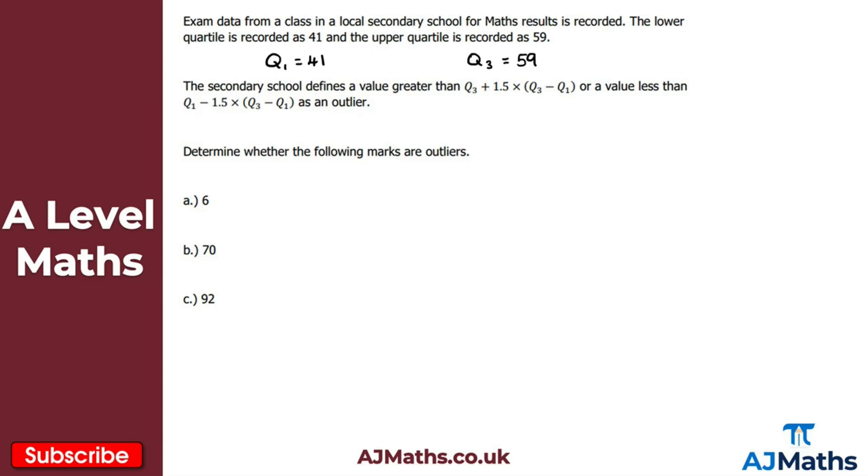We're asked to determine whether the following marks are outliers. So where do we begin? Well, I'm going to take these calculations: any value greater than Q3 + 1.5(Q3 - Q1) would be an outlier, and any value less than Q1 - 1.5 times the interquartile range as an outlier. So let's evaluate Q3 - Q1, the interquartile range. This will be 59 - 41, which gives me 18.